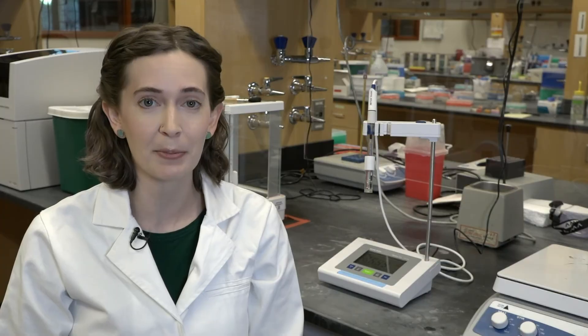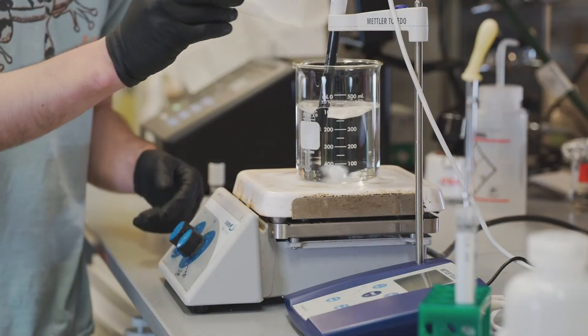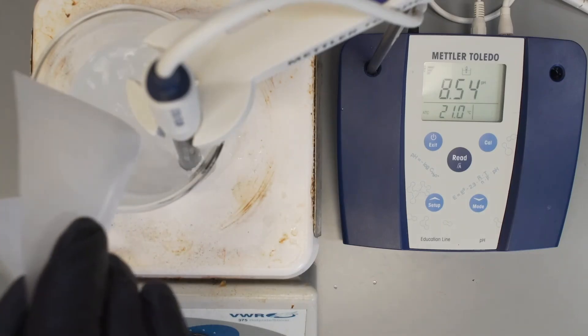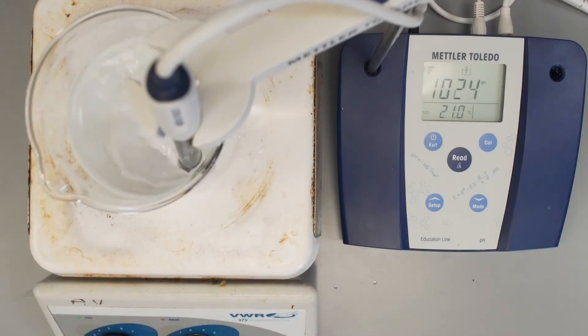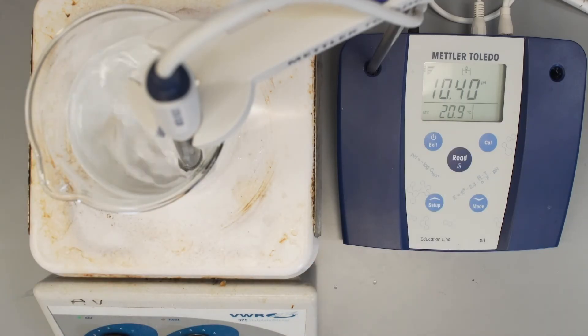pH meters are also super handy when you need to adjust your solution to a desired pH for an experiment. In this example, a basic buffer called Tris has just been added to the water. You can see the pH shoot way up and get as high as 10.5.